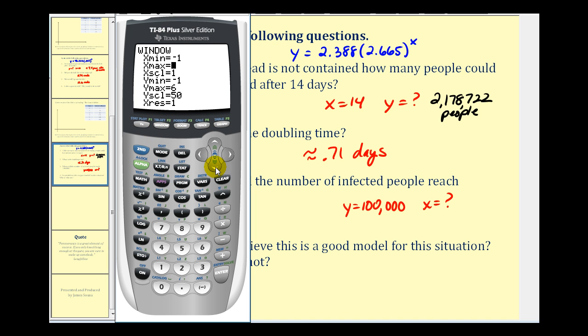So we'll press window. Let's change the x max to 12. Let's change the y minimum to negative 500 and the y maximum to let's say 110,000. Now let's press y equals and then we'll enter in 100,000 in y2. Let's go ahead and press graph and see if the point of intersection shows on the screen. There's our model and there's the line y equals 100,000. So the x value of this point of intersection will tell us when will 100,000 people be infected according to the model.